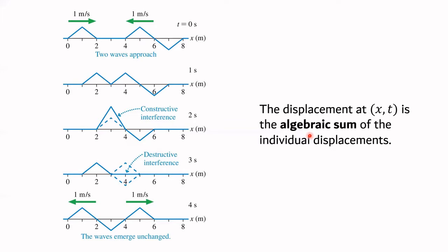That word 'algebraic' almost isn't even necessary — it's just the sum. Since this peak is moving to the right and this peak is moving to the left, at the moment they both overlap. Each peak, let's say, has a height of 1. You add the two heights together and you get a total height of 2. That's it.